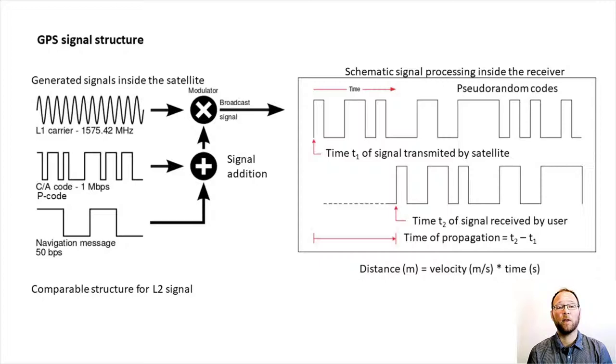As a rule of thumb, signal correlation is accurate to one hundredth of the physical length of the signal. For the pseudorandom code, this length is about 300 meters and therefore we can get distance to each satellite to about 3 meter accuracy.